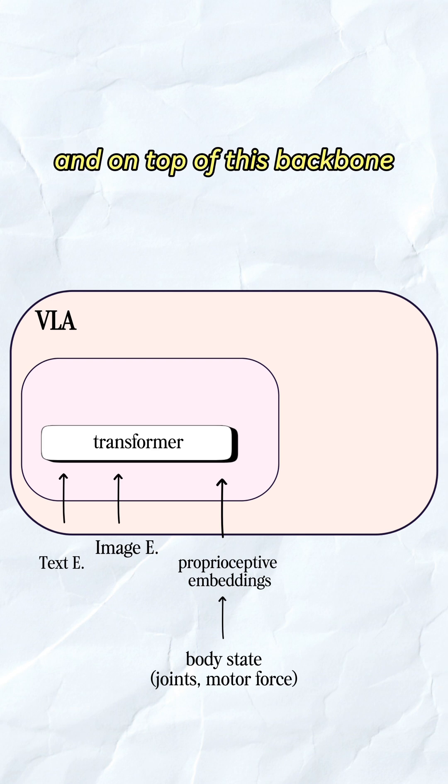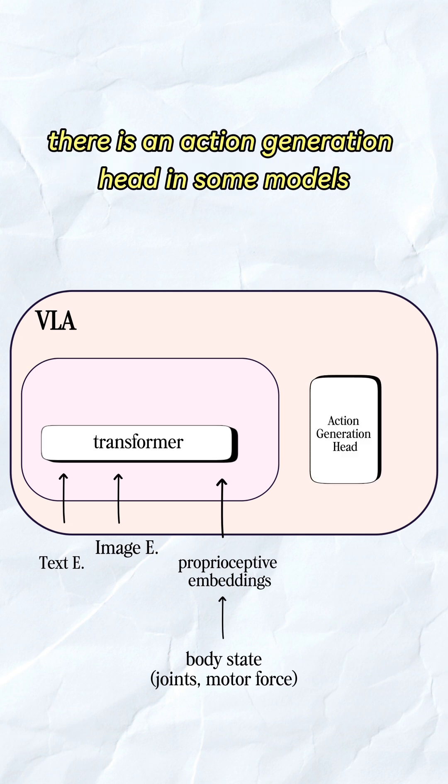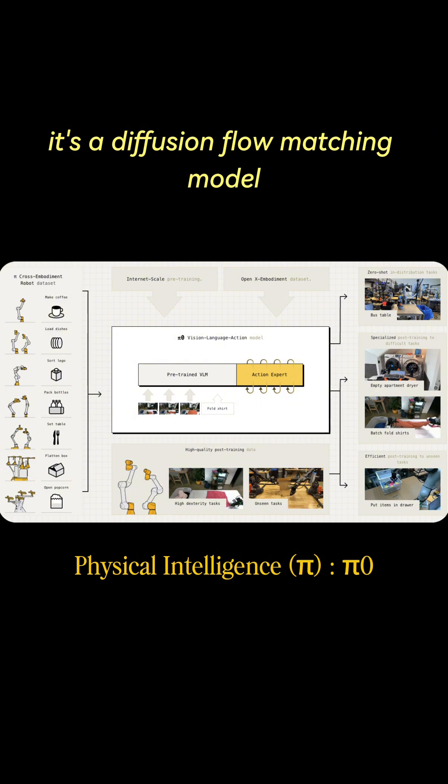And on top of this backbone, there is an action generation head. In some models, it's a diffusion flow matching model. In others, it's a simpler MLP head, which takes this latent representation and turns it into a sequence of robot actions.